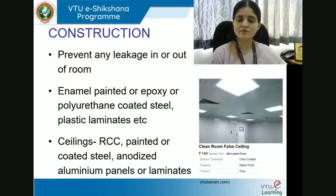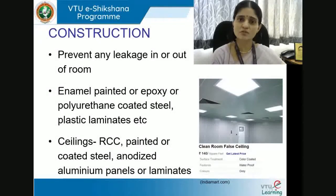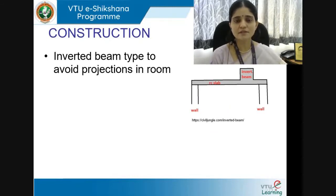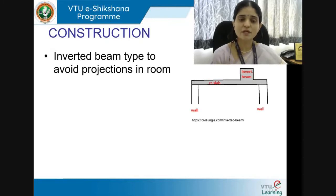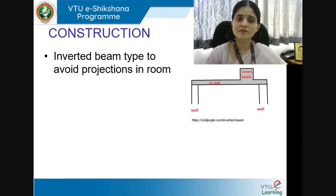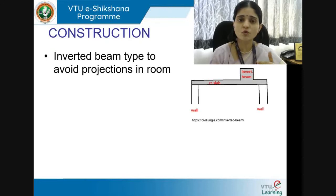For example, a clean room false ceiling can be color-coated, waterproof, with color specifications available for the architect's choice. Inverted beam type construction is preferred to avoid projections in the room — rather than beams dropping into the space, an inverted or up-hung beam reduces downward protrusions and leaves the plenum space open for ducting and routing of pipes.